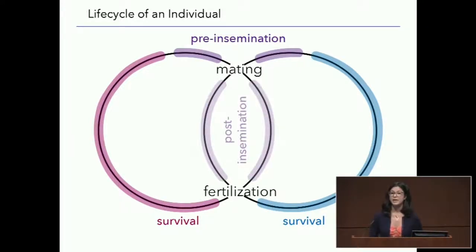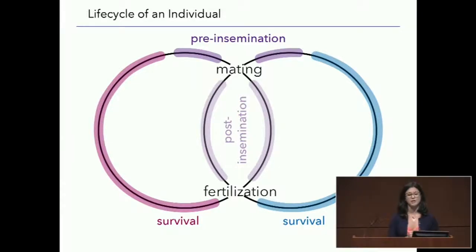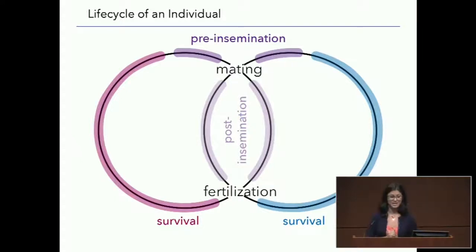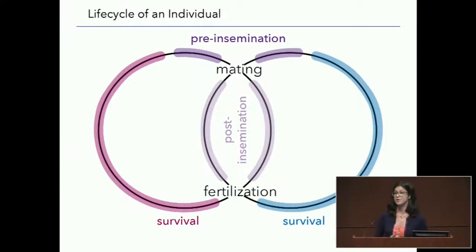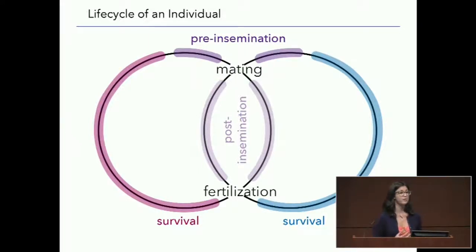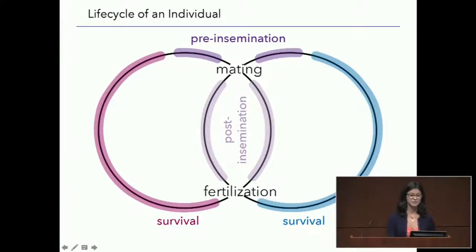Here we have gametic interactions — things like sperm competition, sperm-egg interactions, as well as interactions with the female reproductive tract. This has kind of been a black box up until now, especially in internally fertilizing organisms; this is a really hard area to study. But these gametic processes are thought to be very important, and they're going to modulate whether that successful mating is turned into a successful fertilization.